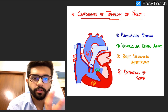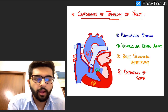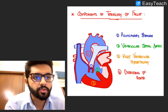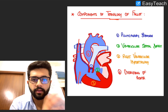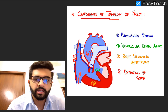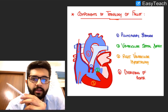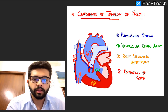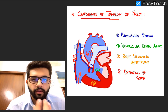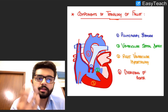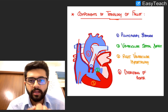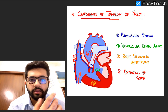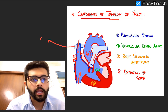Before I talk about the pathophysiology of TOF in detail, I'll just outline normal circulation. Normally you have deoxygenated blood coming into the right heart from the superior vena cava and inferior vena cava, which drain into the right atrium. From the right atrium, blood drains into the right ventricle, and the deoxygenated blood is then pumped towards the lungs via the pulmonary artery.